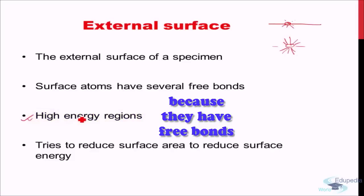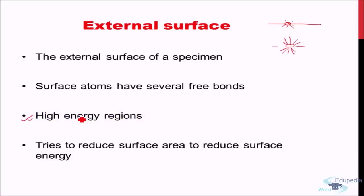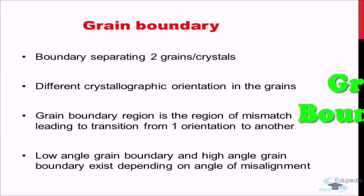Ideally, a material would try to minimize its external surface area. During solidification, materials try to solidify in a spherical manner. But once solid, the surface area cannot change. This is why external surface is called a defect — the atoms do not have the type of bonding they would have in the bulk. Now let's jump into the more important two-dimensional defect: the grain boundary.